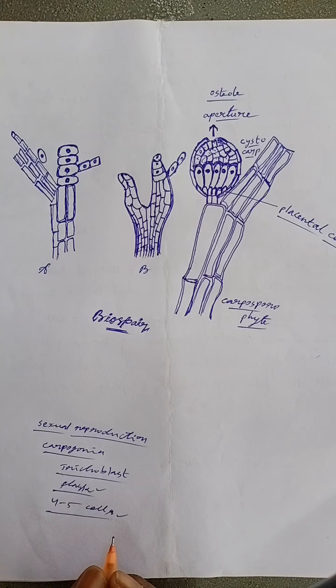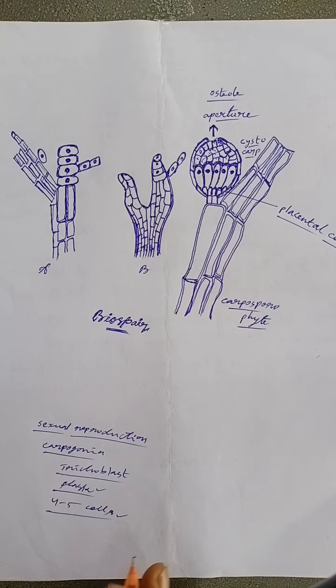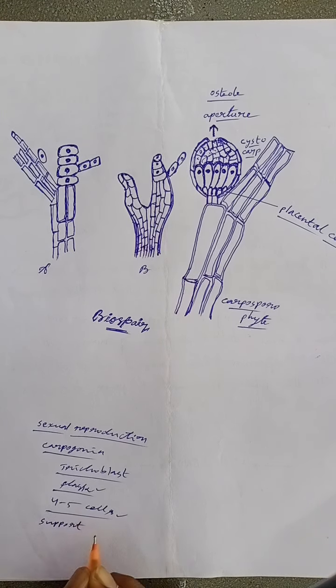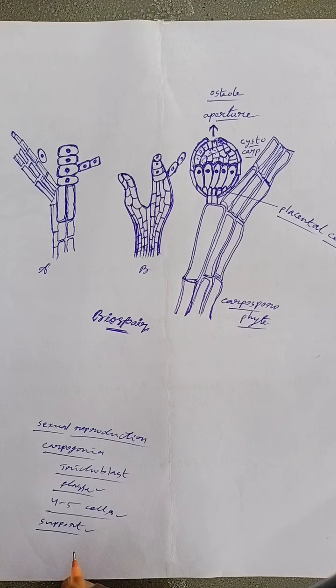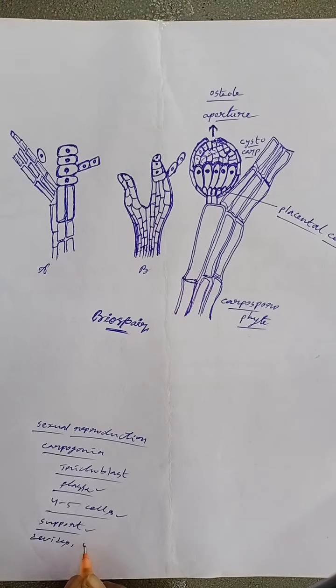This supporting cell divides transversely to form four to five celled slightly curved carpogonial filaments.